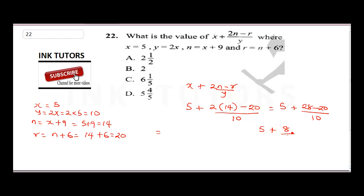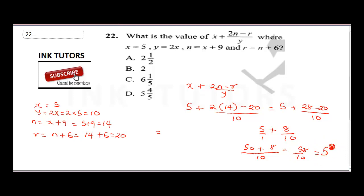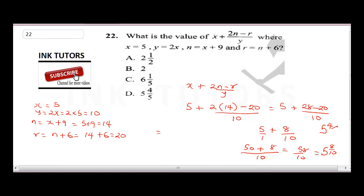5 plus 28 minus 20 gives us 13 — wait, performing the LCM: 10 divided by 1 is 10, 10 times 5 is 50, plus 8, giving 58 over 10. Converting to a mixed number: 5 whole number and 8 over 10. Reducing 8 over 10 to simplest form gives 4 over 5, since 2 cancels.